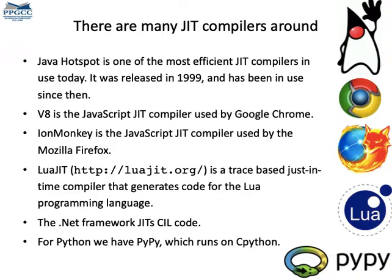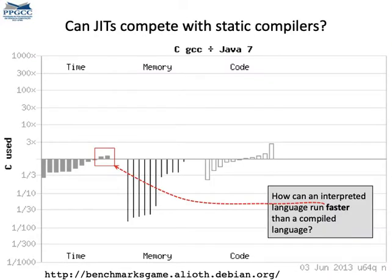There are many JIT compilers in use today. Some of the most well-known are listed in this figure. This family includes Java Hotspot, JavaScript V8, IonMonkey, LuaJIT, and PyPy, for instance. And sometimes JIT code can even run faster than code compiled by an ahead-of-time compiler.